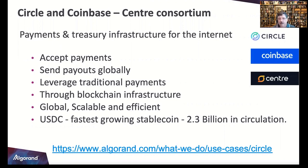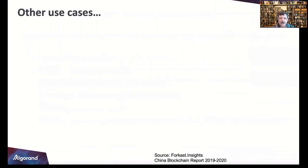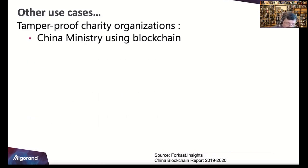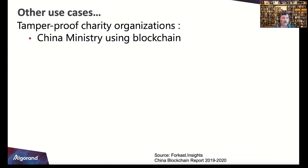Scalability is very important — you want this to be globally available as well as fast. Other use cases I got from the China blockchain report — China's on board in 2020. They're looking at using it for tamper-proof charity organizations. The title of the report is something like 'Blockchain is not the future, it's the present' — a lot of these solutions are already in the works.